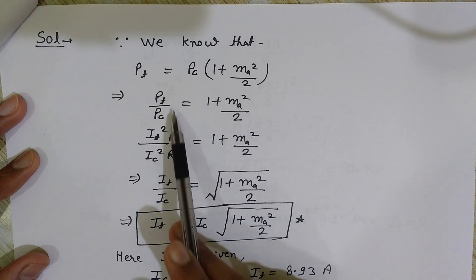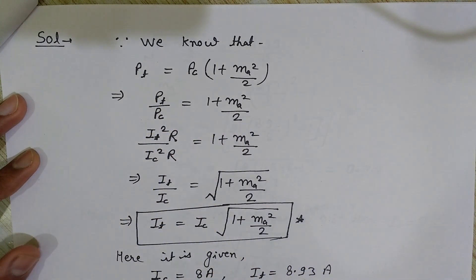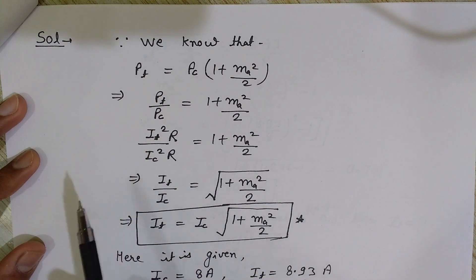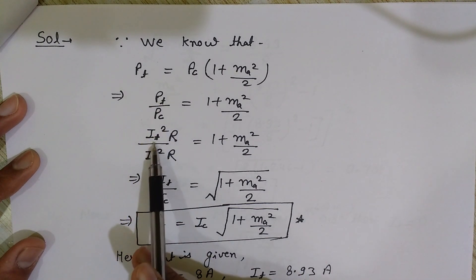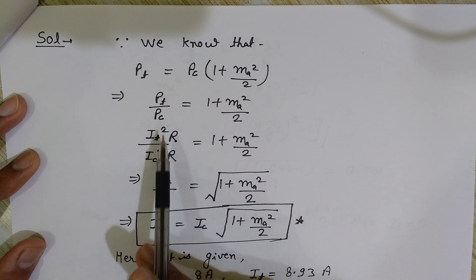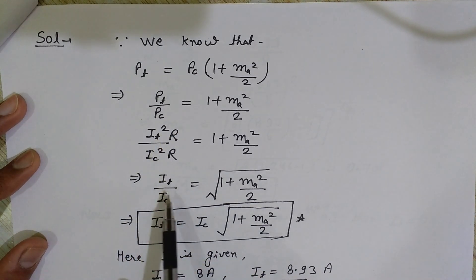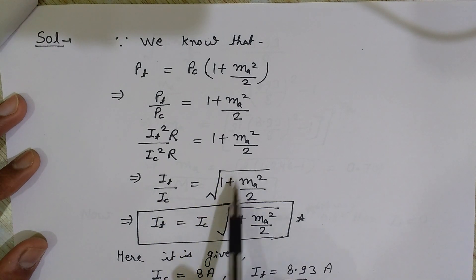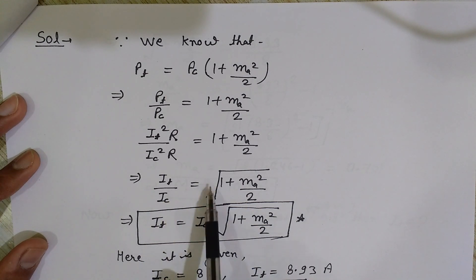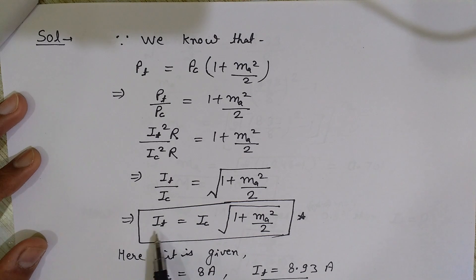Using the basic formula P = I²R, we get P_T = I_T² × R and P_C = I_C² × R. Since R cancels out, we get I_T / I_C = √(1 + ma² / 2). Taking I_C to the right side, the formula becomes: I_T = I_C × √(1 + ma² / 2). This is the formula we will use to solve the problem.